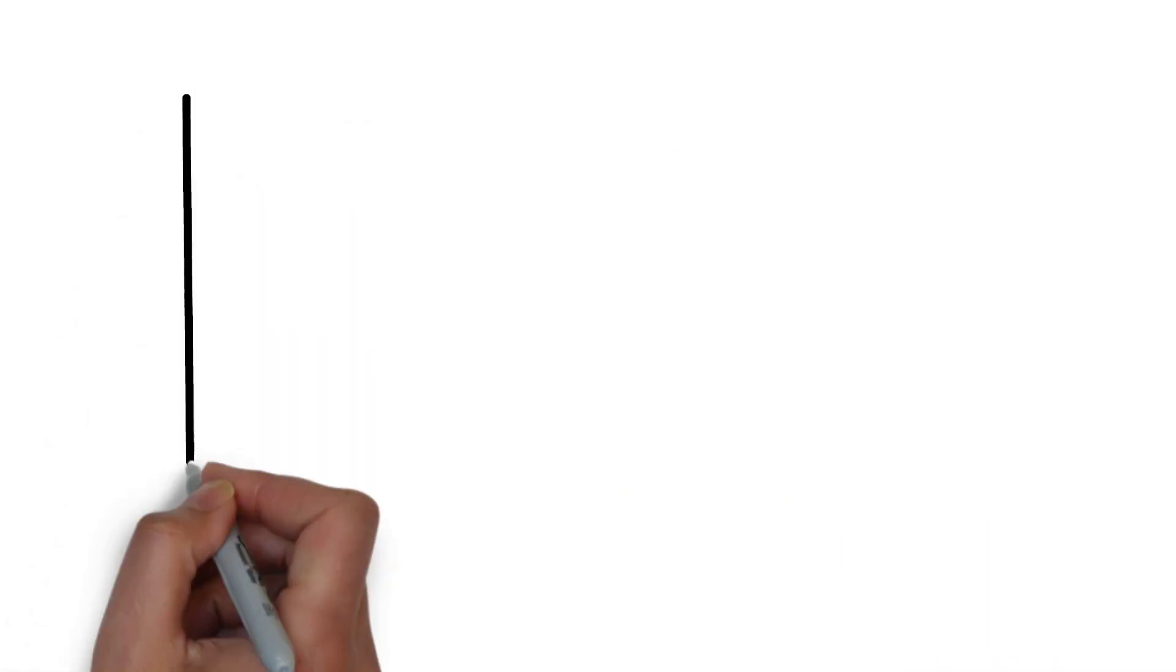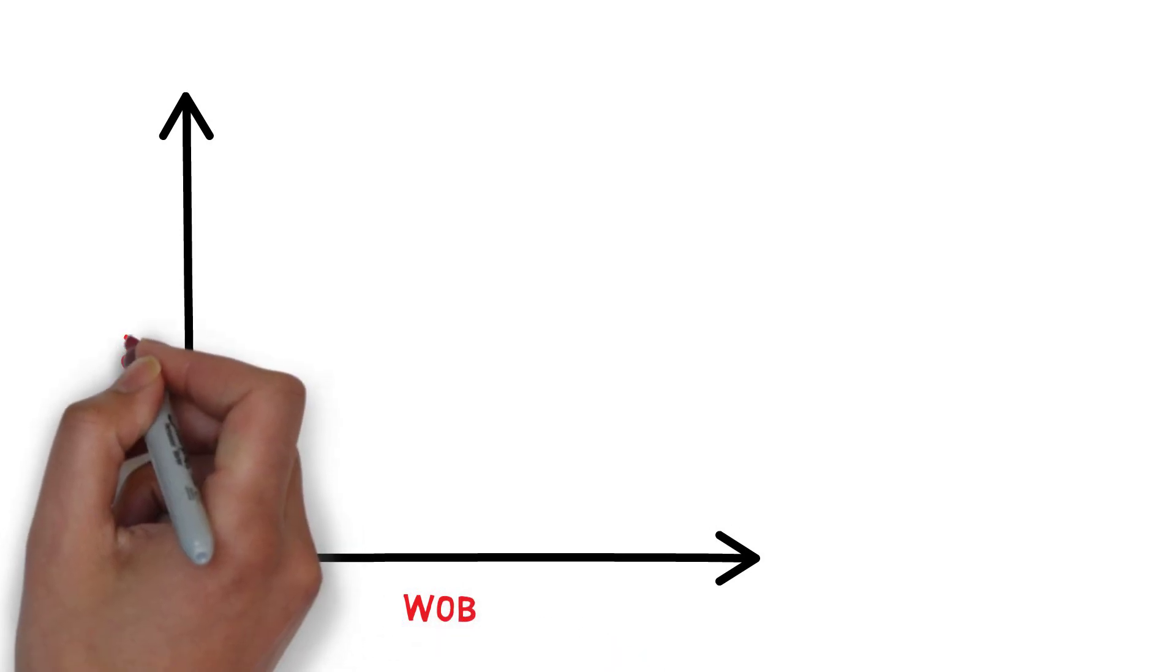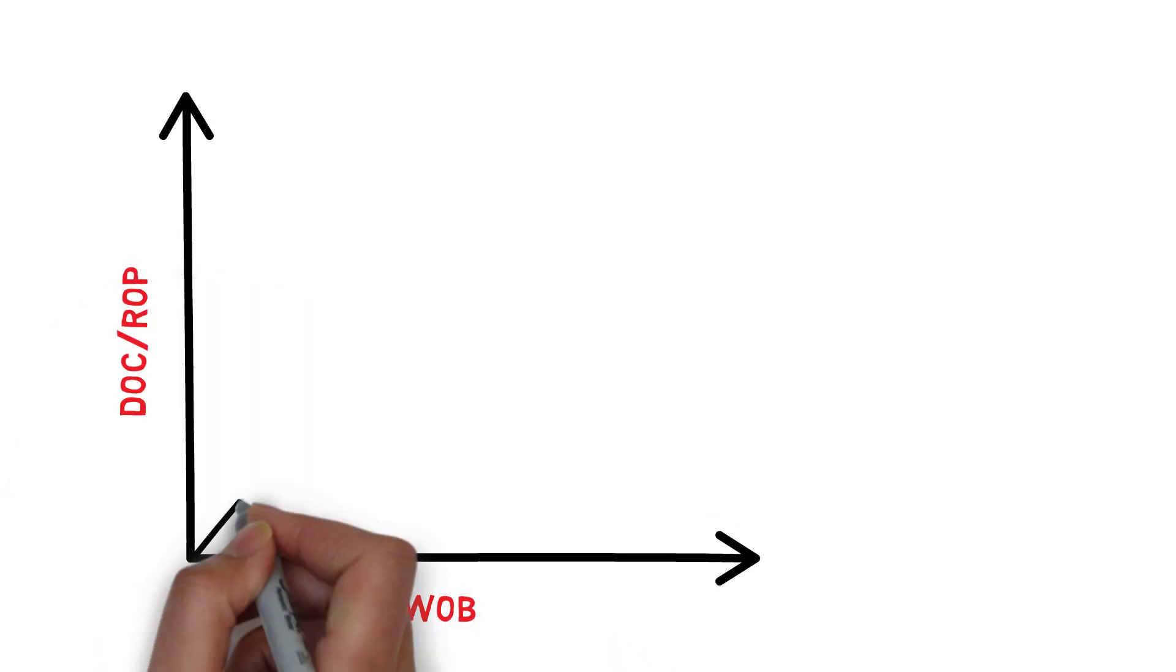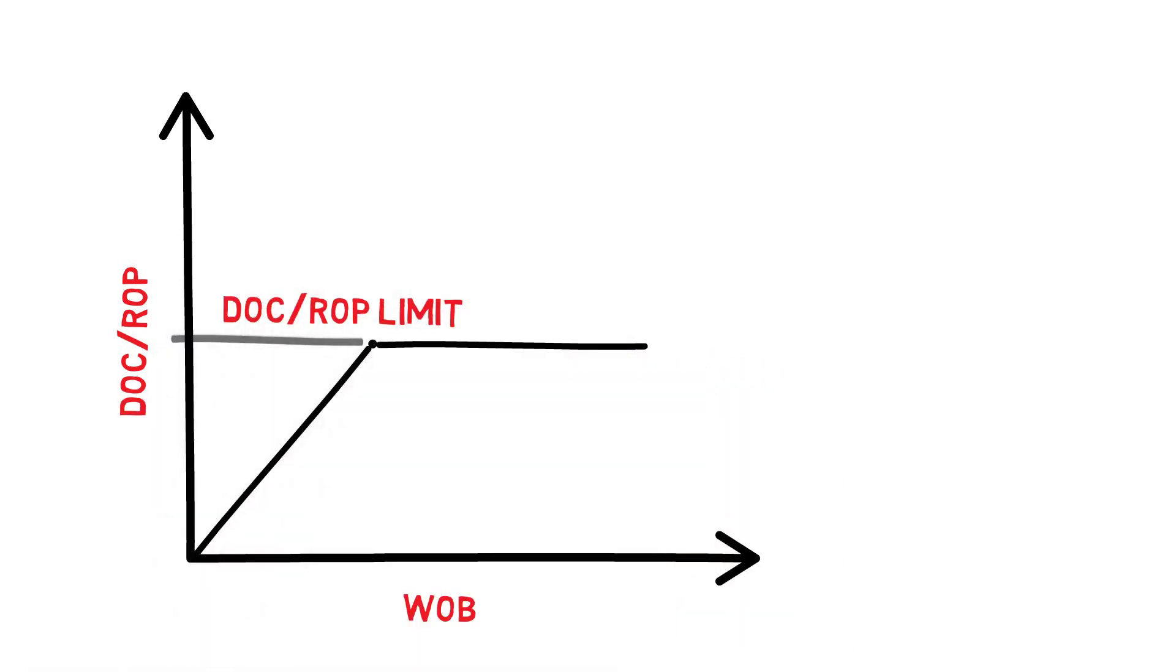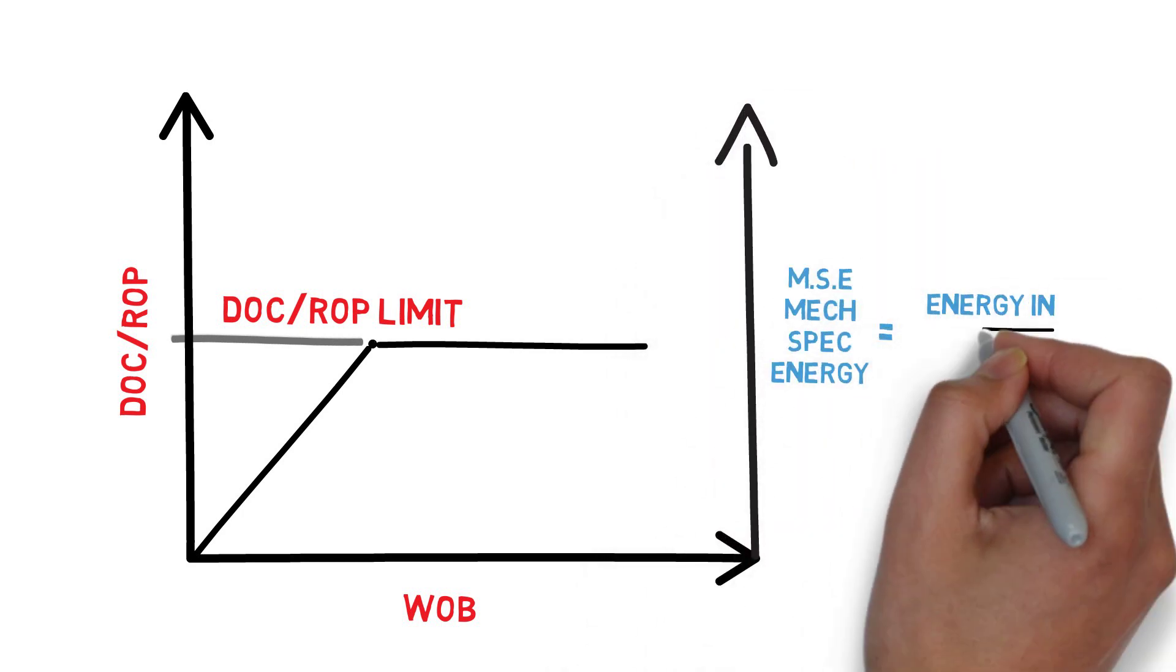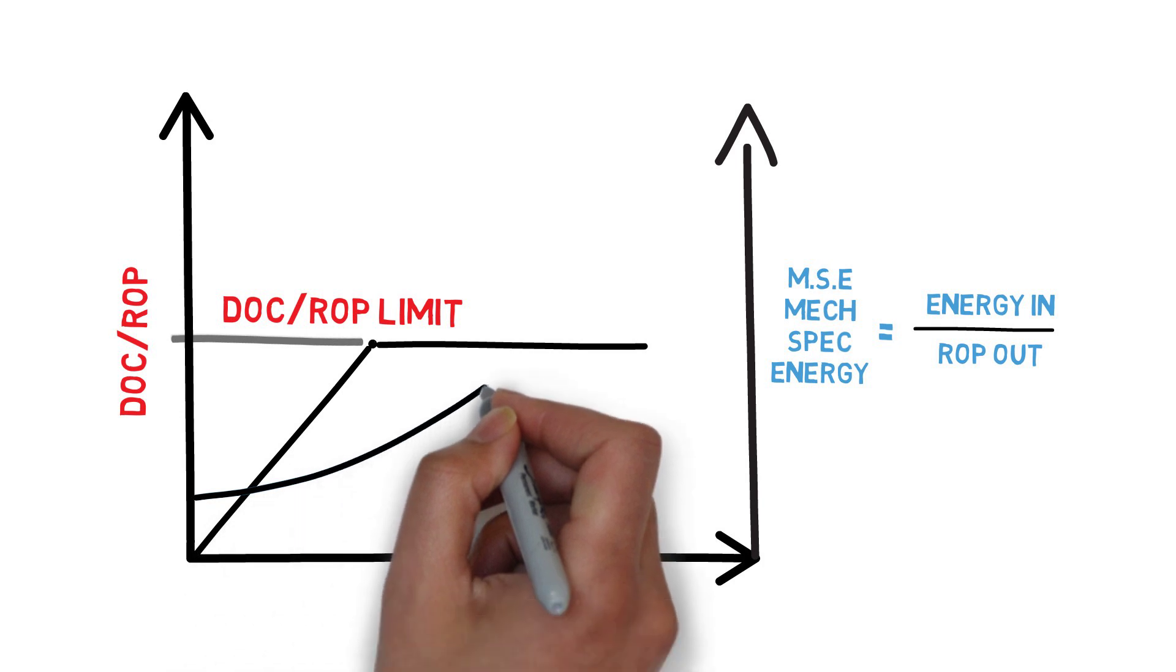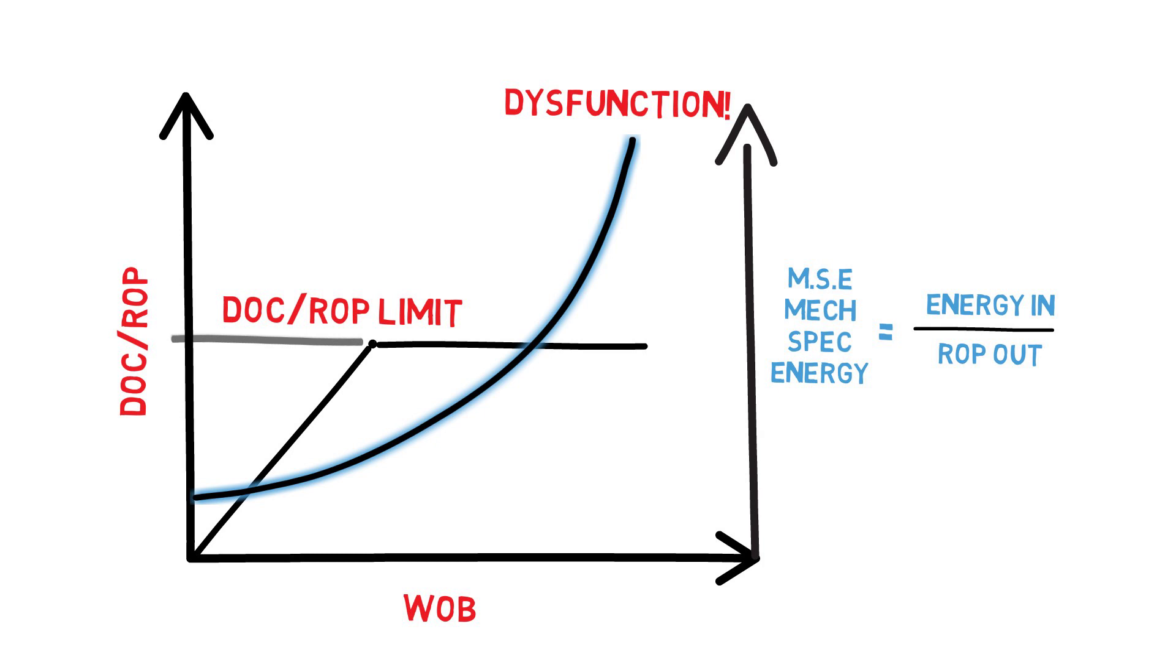An important but commonly overlooked aspect of limiting depth of cut is that it can actually cause drilling dysfunction. In theory, as you add weight on bit you reach a point where depth of cut and ROP top out. However, at that point MSE, the ratio of energy into the bit to ROP out, shoots up, indicating energy is exiting the system in a dysfunctional way, usually as harmful vibration.